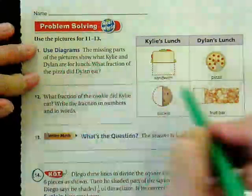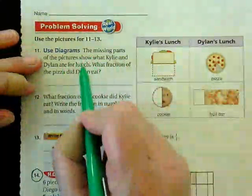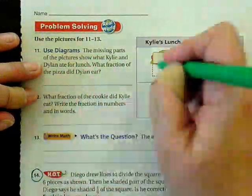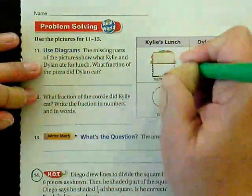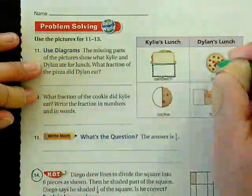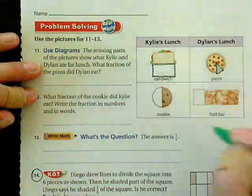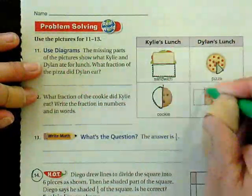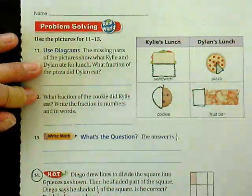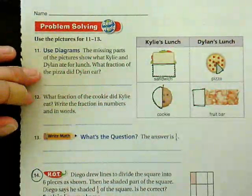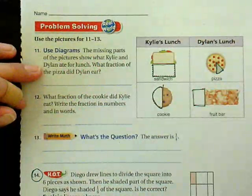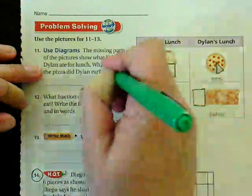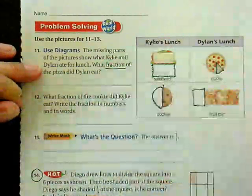So we're using the diagram. The missing parts of the picture show what Kylie and Dylan ate for lunch. Kylie ate this part of the sandwich, and Dylan ate this part of the pizza. Kylie ate this part of the cookie, and Dylan ate this part of the fruit bar. This question is asking me, though, what fraction of the pizza did Dylan eat? We're looking for a fraction, and we're looking at the pizza.